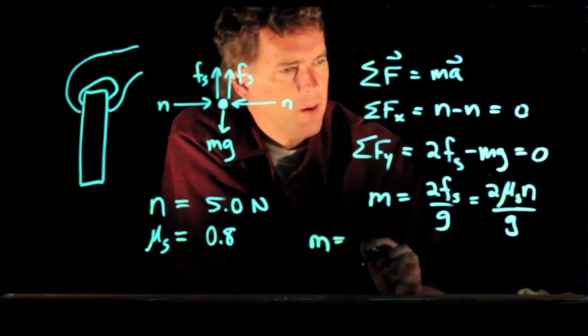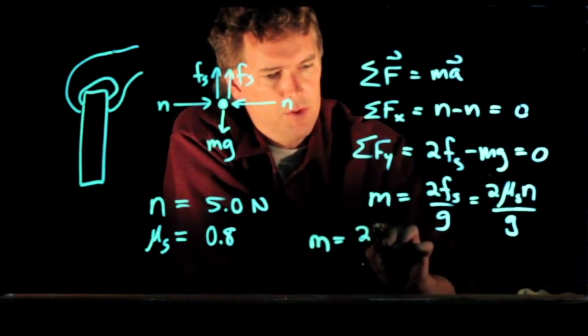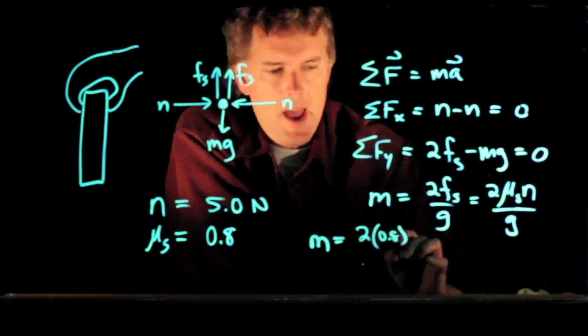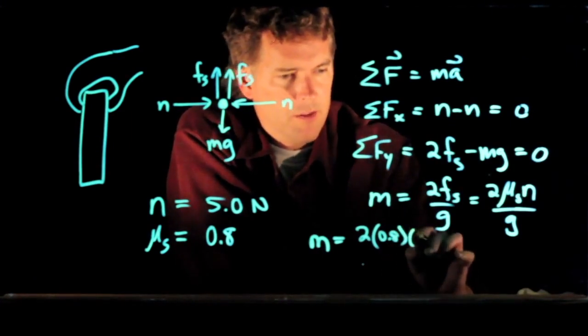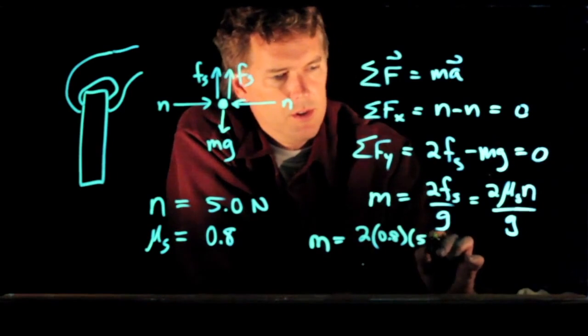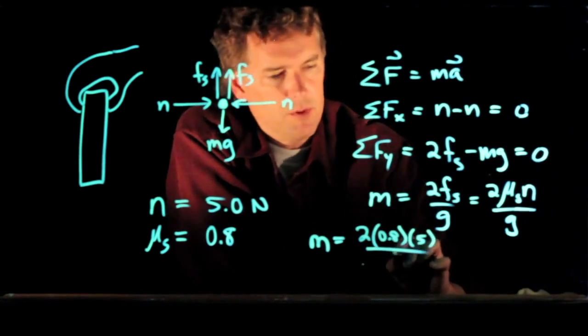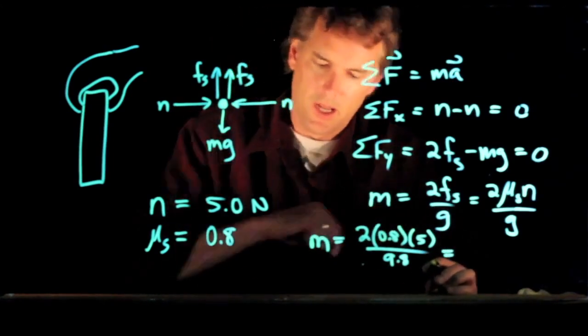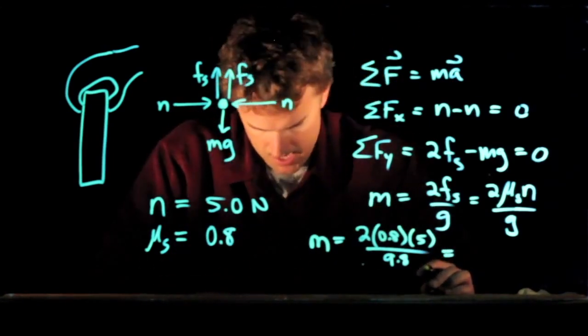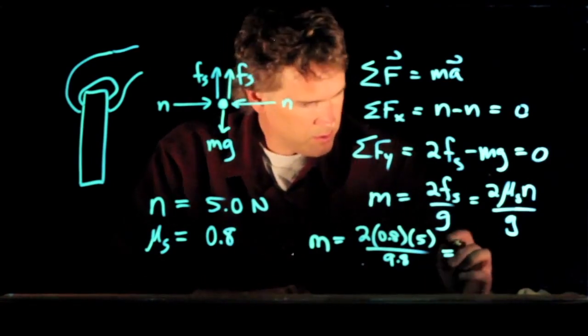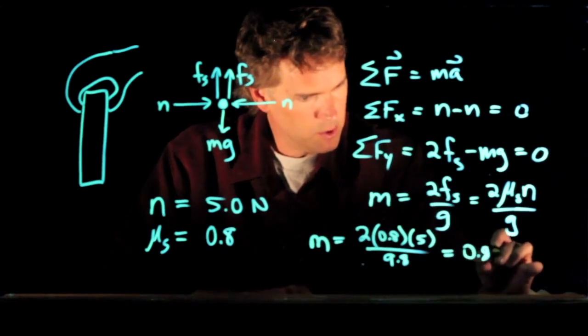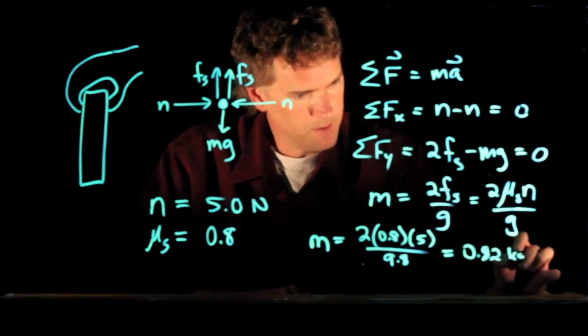So now let's run some numbers and see what we get. We've got m equals 2 times mu S. We said that was 0.8. n we said was 5 Newtons. And g is of course 9.8. We've got SI units everywhere, so we should end up in kilograms. And if you run those numbers, you should get 0.82 kilograms.